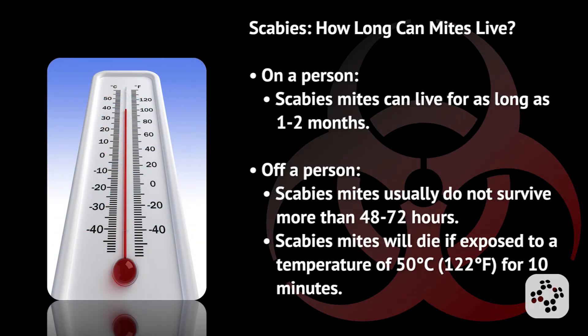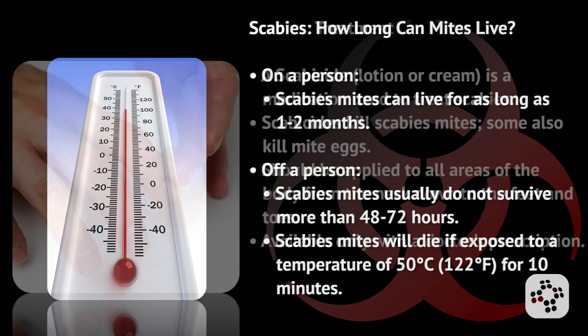How long can scabies mites live? On a person, scabies mites can live for as long as one to two months. Off a person, scabies mites usually do not survive more than 48 to 72 hours. They will die if exposed to a temperature of at least 50 degrees Celsius — that is 122 degrees Fahrenheit — for at least 10 minutes.